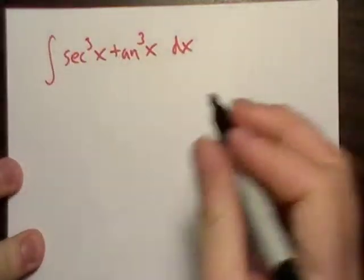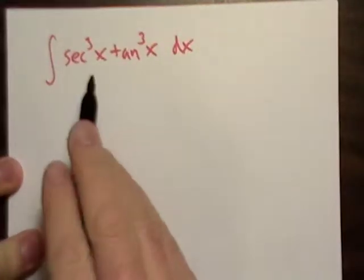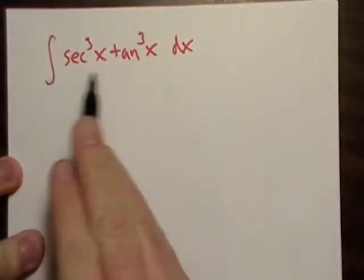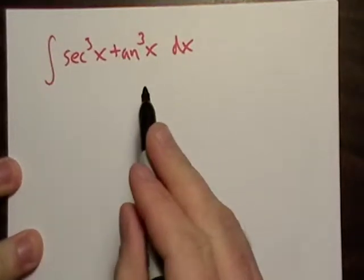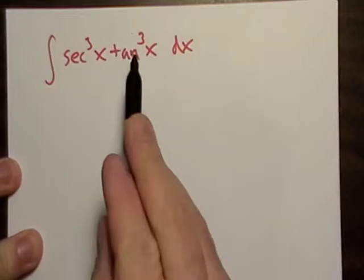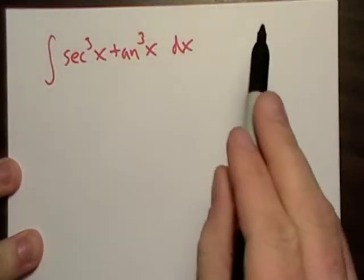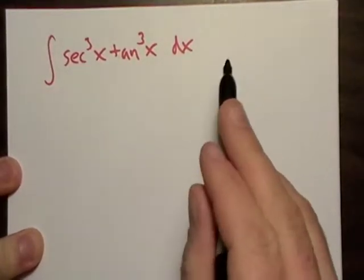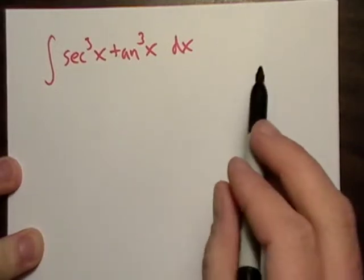But before I do that, if I factor out just a secant and a tangent from each one of these, I'll end up with secant squared tangent squared times secant tangent, and we know secant tangent is the derivative of secant.